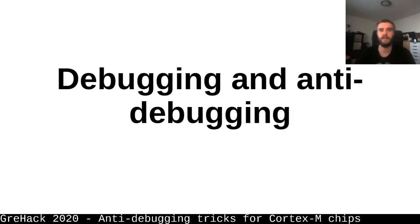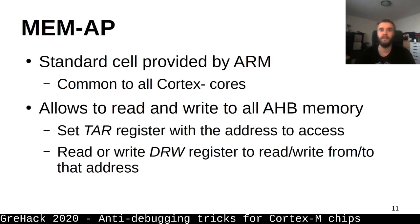Now that we know how to access the APs, we need to understand how we can access the core system memory. This is done using what is called the AHB-AP or MEM-AP, depending on the documentation. This AP is created by ARM and is able to query any part of the core system memory and send data back on the DAP bus. The main concept is: you first set the TAR register with the address you want to read or write, then read or write the DRW register to transfer data to or from that memory address. There are other features in this MEM-AP depending on the Cortex-M series you are using.